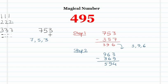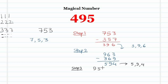From the number 594, the digits are 5, 9, and 4. Let's do Step 3. Form the largest number: 954. Form the smallest number: 459. Find their difference: it is 495.